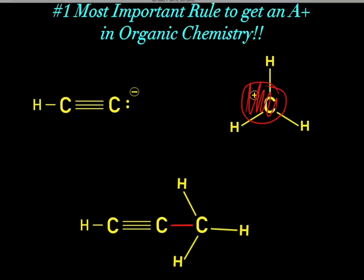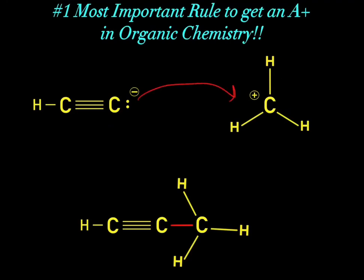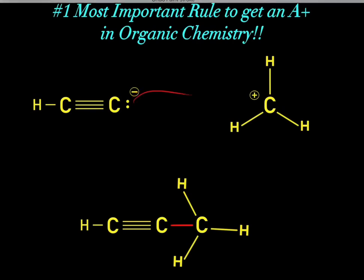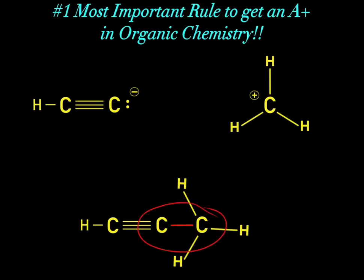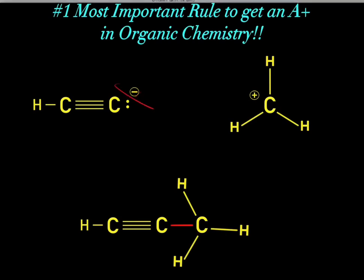Whenever we have localized charge density — whether it's positive or negative — that's high in energy and unstable. So we have two unstable structures with high charge density. However, when they chemically react with one another, the negative charge destroys the positive charge — these charges cancel out one another. So now we have no charge density, which is stable. When they react, there are no formal charges, so we have lower, near non-existent charge density. That's why molecules react in the first place. In organic chemistry, most of the time when molecules react, they react to destroy charges because that results in lower, stable charge density.